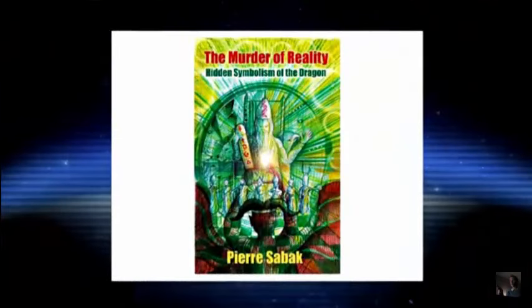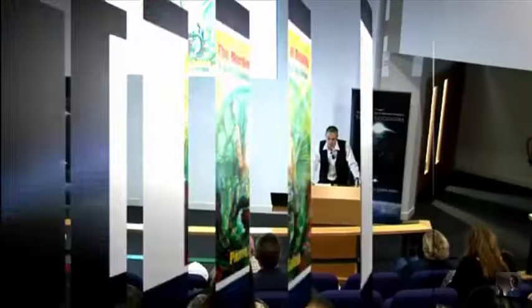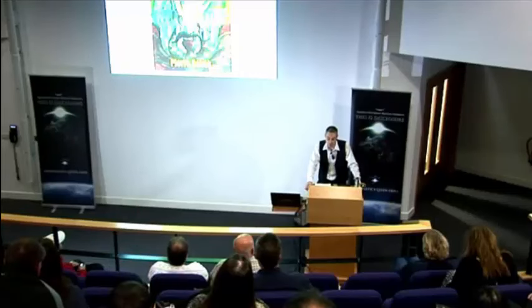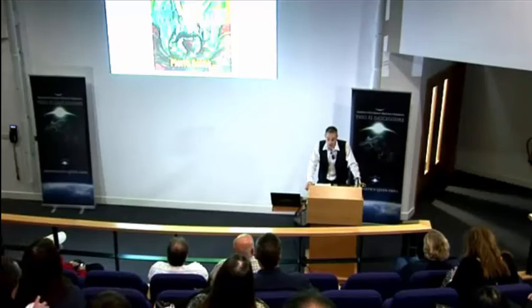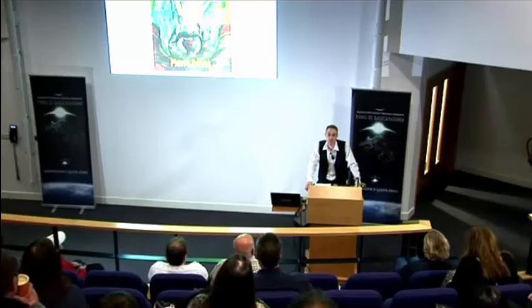I'm the author of the book The Murder of Reality, Hidden Symbolism of the Dragon. Primarily, it's an etymological study on the nature of the serpentigena, which refers to the serpent race. I study subjects such as the fallen angels, the djinn, and I particularly go into a field which I have labelled as illuminotics.